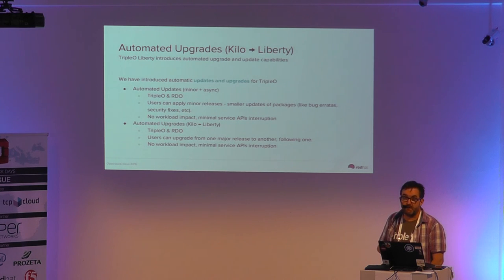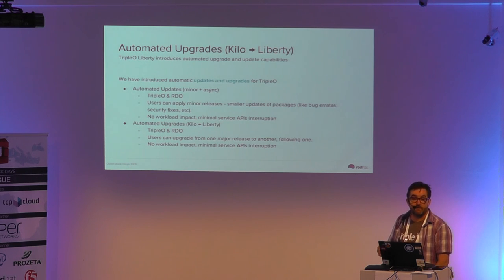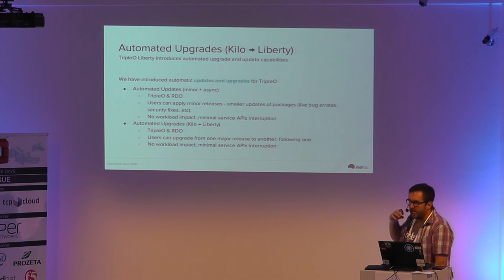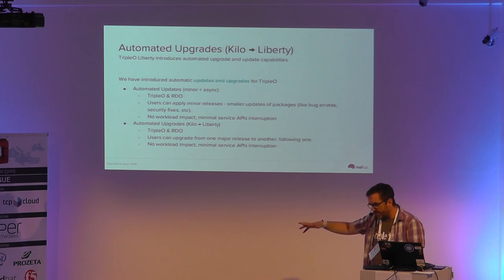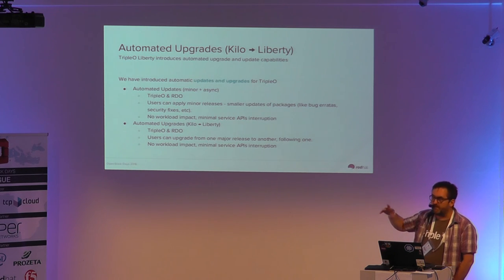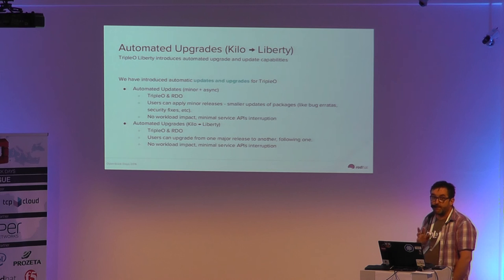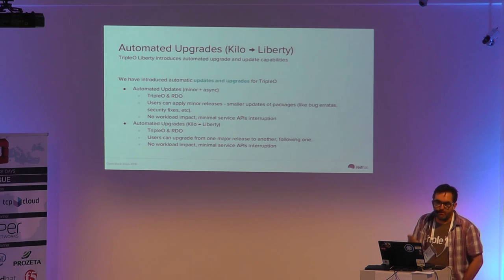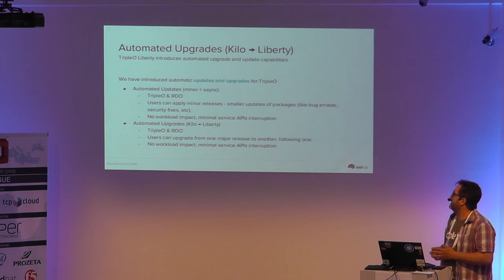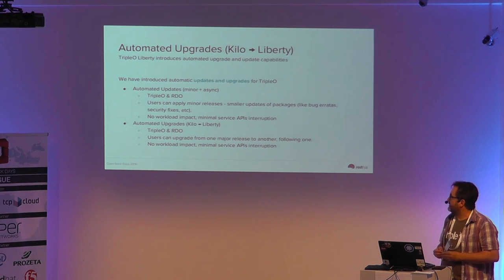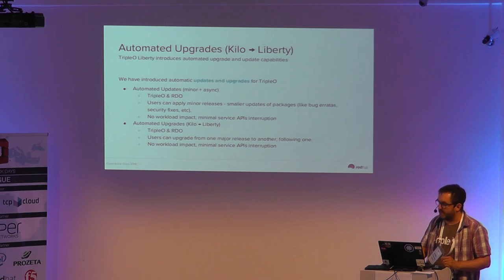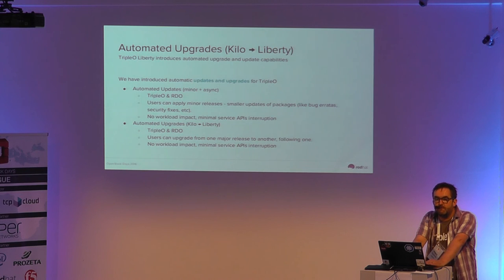A huge area that has seen a lot of work recently — and this is one of the areas where the difference between a simple proof of concept and actual real customer deployments really becomes an issue — is updates and particularly upgrades between OpenStack versions. As you know, there's a new major OpenStack release every six months with a lot of new features. It's very important that people have an upgrade path whenever they choose to execute on it. Allowing complex network topologies and highly available services and clusters to be upgraded from one release to another with minimal disruption and maximum automation has been a real engineering challenge, but it's something that now exists in TripleO. Third-party component integrations also make upgrades a good deal harder.